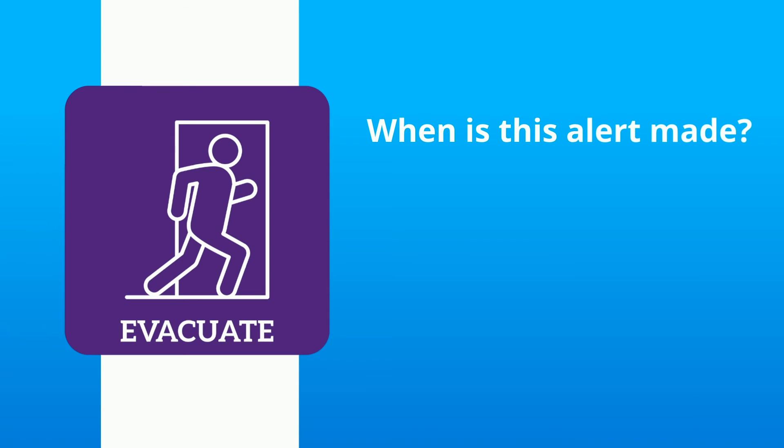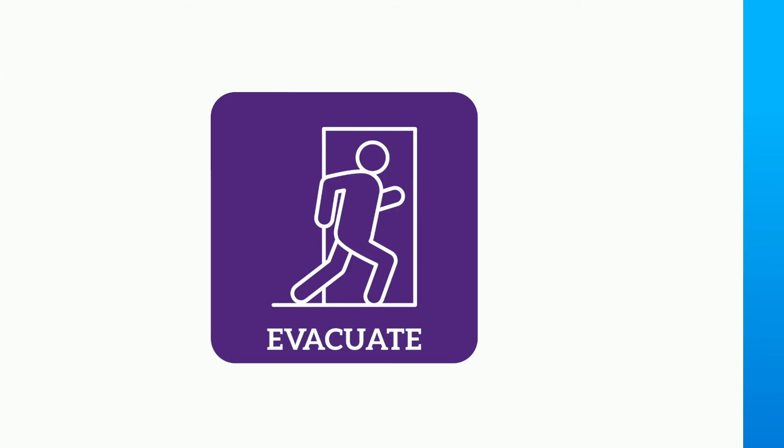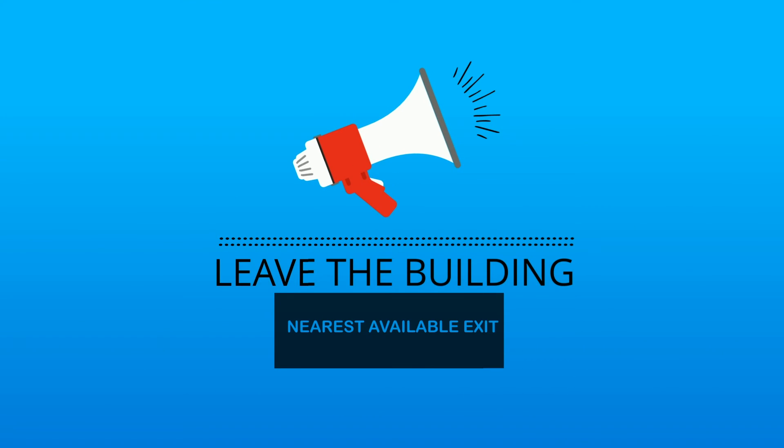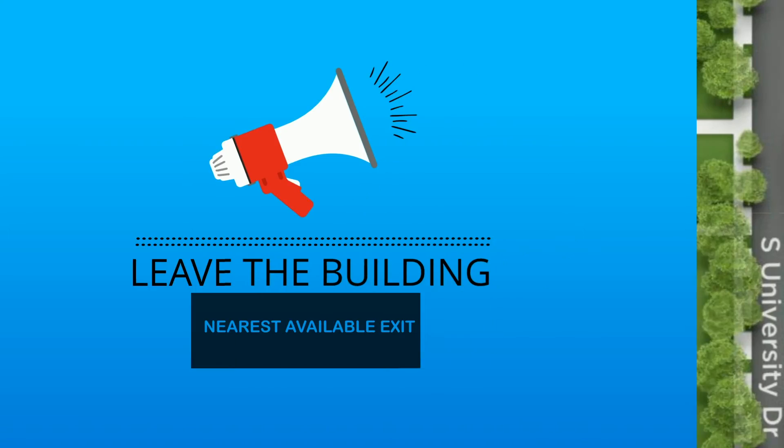Evacuation. Remember that an evacuate TCU alert announcement would be made if there was a gas leak, a credible bomb threat, or a fire. After hearing the TCU alert message to evacuate, you should immediately leave the building using the nearest available exit to report to the building's designated rally point. Rally points can be found online and on the FrogShield app.